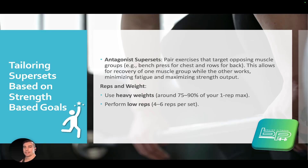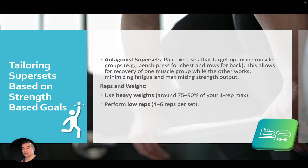When tailoring supersets for strength-based goals, use an antagonistic superset pairing exercises for opposing muscle groups, such as bench press for chest and rows for back. This allows one muscle group to recover while the other works, minimizing fatigue and maximizing strength output. Use heavy weight — around 75% to 90% of your one rep max — and perform low reps, about four to six reps per set.